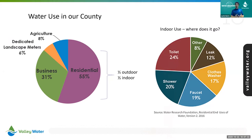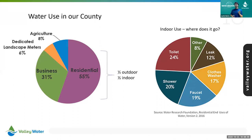Looking at who uses water, a little more than half is used by residences. Here's something really interesting: since the early 1990s, we use the same amount of water as we do today, despite hundreds of thousands more people in Santa Clara County. That's thanks to people like you who upgraded their toilets, clothes washers, and installed efficient irrigation equipment. Water conservation has been a main driver in maintaining consistent water use as population has increased.